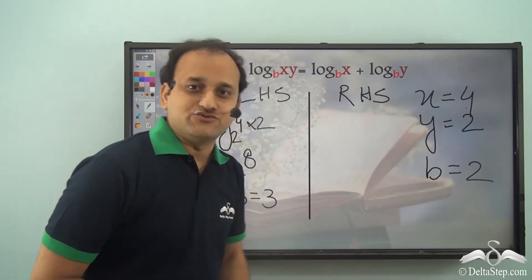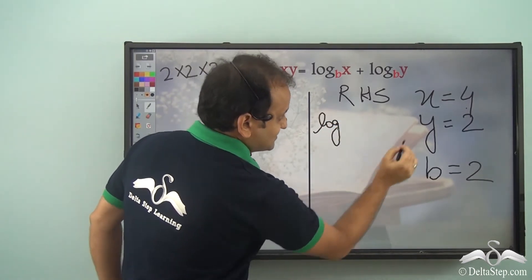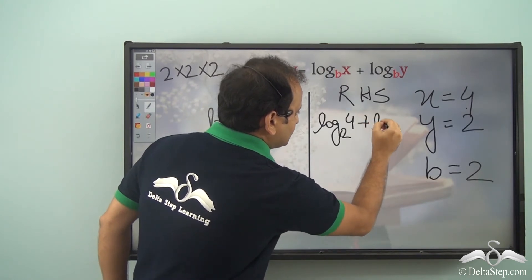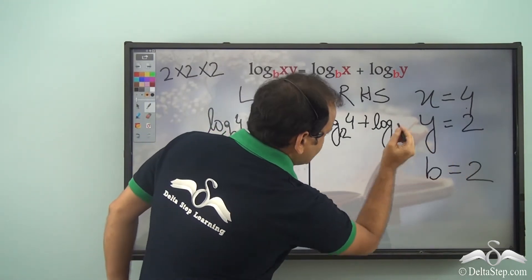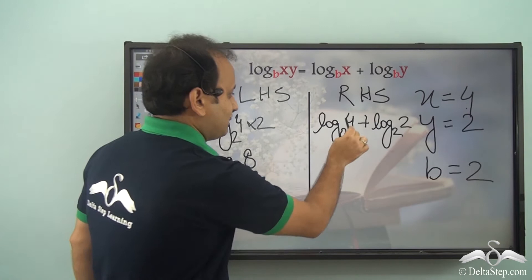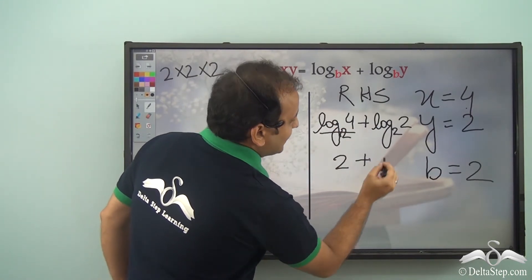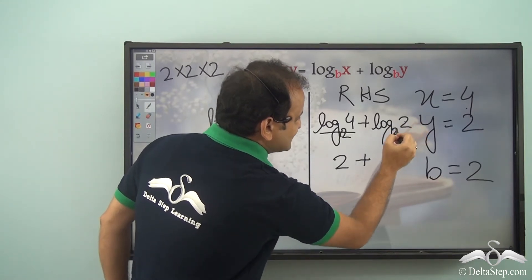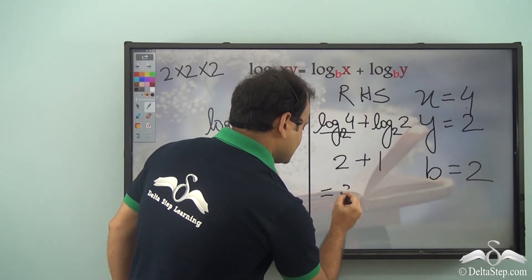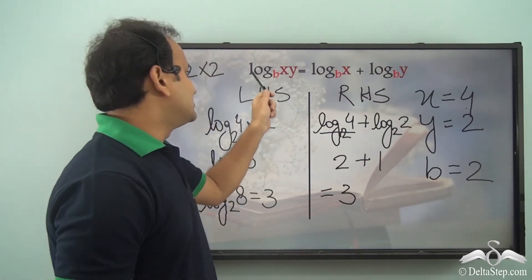Now for the RHS with the same values: log x to the base b + log y to the base b = log 4 to the base 2 + log 2 to the base 2. Since 4 = 2², log 4 to the base 2 = 2. And log 2 to the base 2 = 1, since the argument and base are the same. So RHS = 2 + 1 = 3. LHS equals RHS, confirming the product law is true.